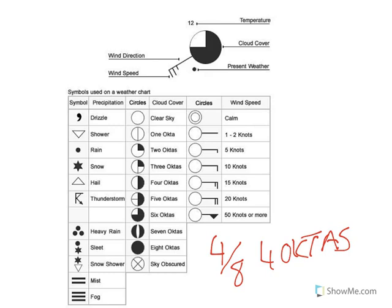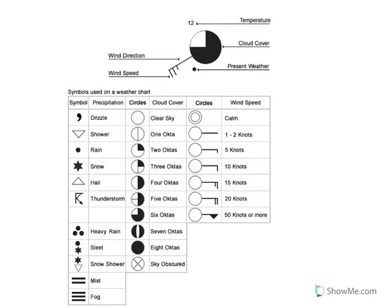There is a symbol that goes with each of these octa values. Zero is an empty circle. One octa has a line through it. Two octas — a quarter — has half of it shaded. Three is similar to two but slightly different. Four is simply half shaded. Five has a tick mark coming in. Six is further filled. Seven has a white line going down the middle through the black — like eight but with a white line. Eight is the fully coloured-in symbol.